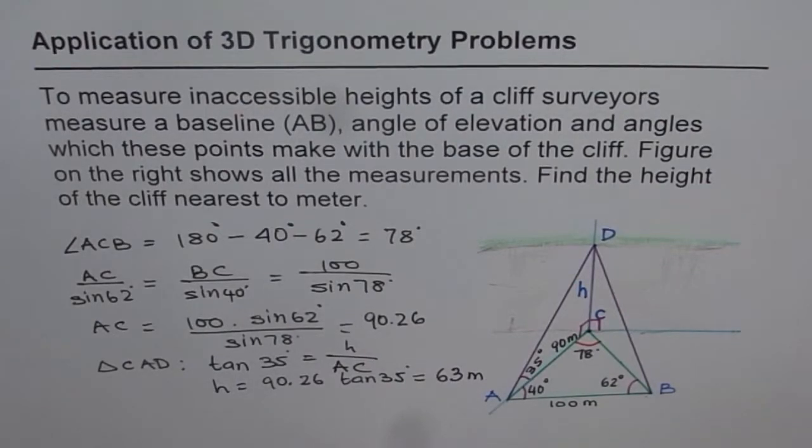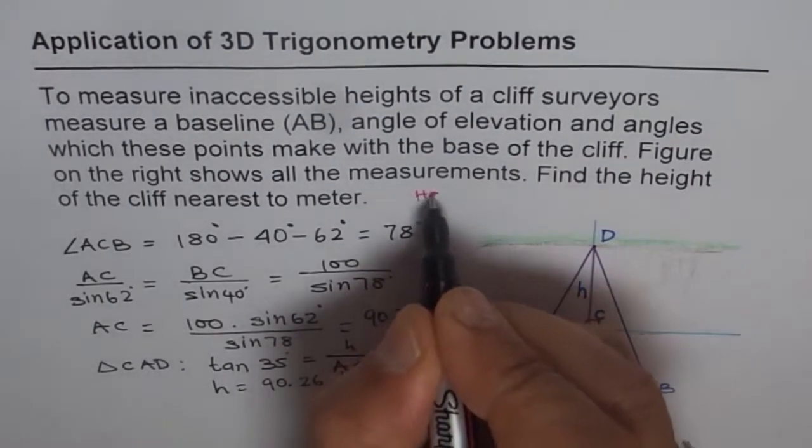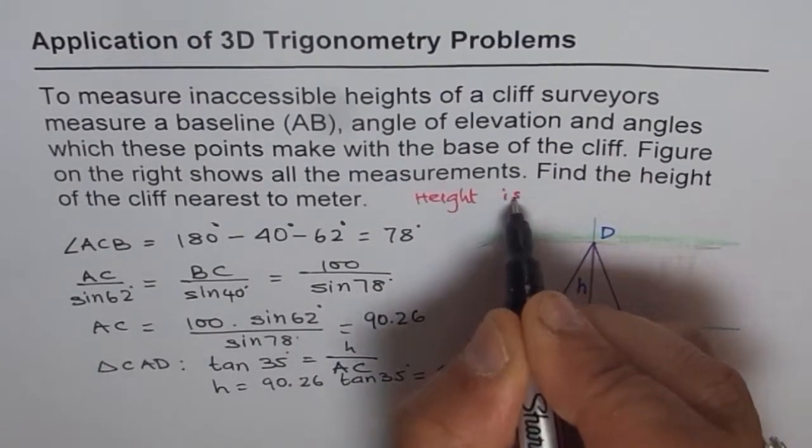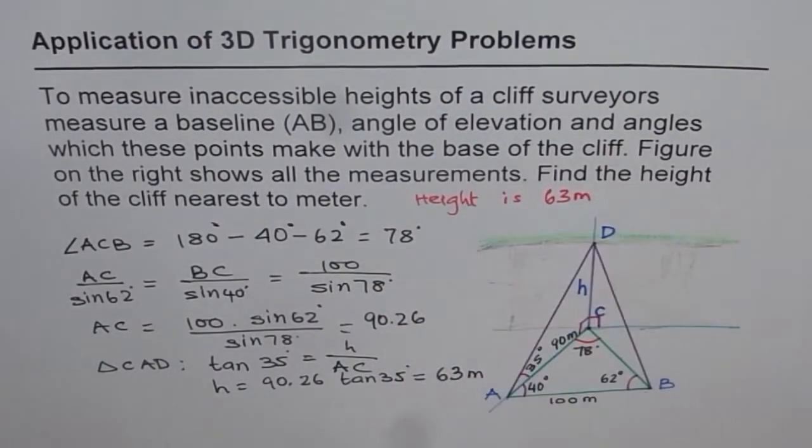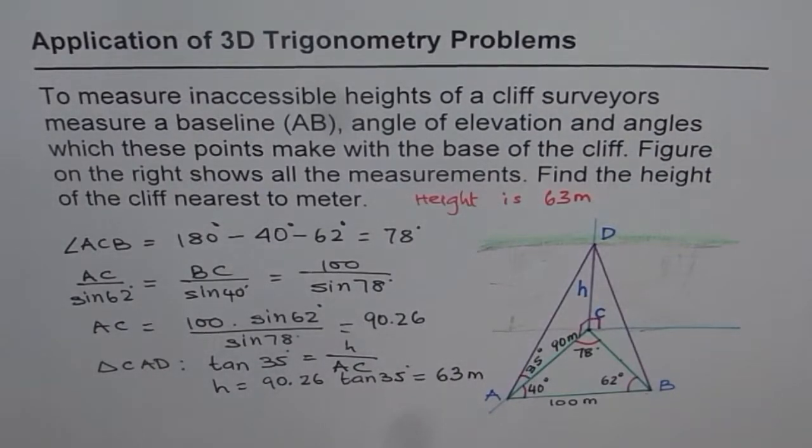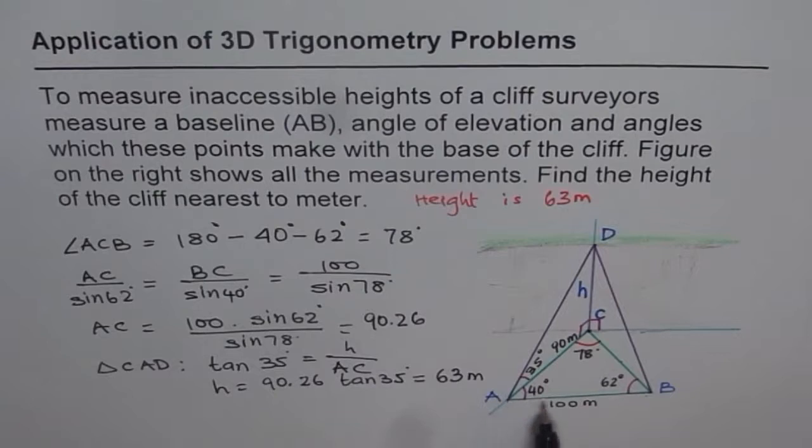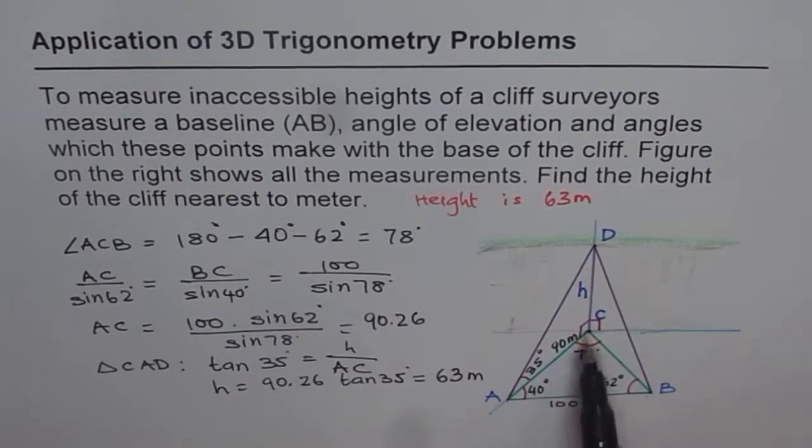So that is our answer. Height of the cliff, we can write down here as the answer. The height of the cliff is approximately 63 meters. So I hope you understand how to solve these 3D problems. This is a very practical and good example to understand the concept. So first, you solve your acute angle triangle using sine law. Once you find its sides, then solve the vertical right angle triangle using primary trigonometric ratios and get the answer. I hope that helps. Thank you.